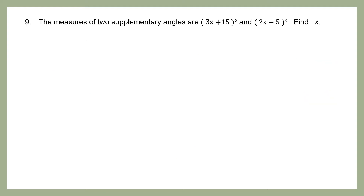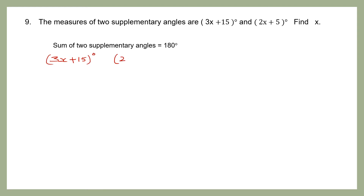Question 9. The measures of two supplementary angles are given this time. One supplementary angle is 3x+15 degrees and the other is 2x+5 degrees. We have to find the value of x. The sum of two supplementary angles equals 180 degrees. So I take the first angle, 3x+15 degrees, and the second angle, 2x+5 degrees, and their sum equals 180 degrees.